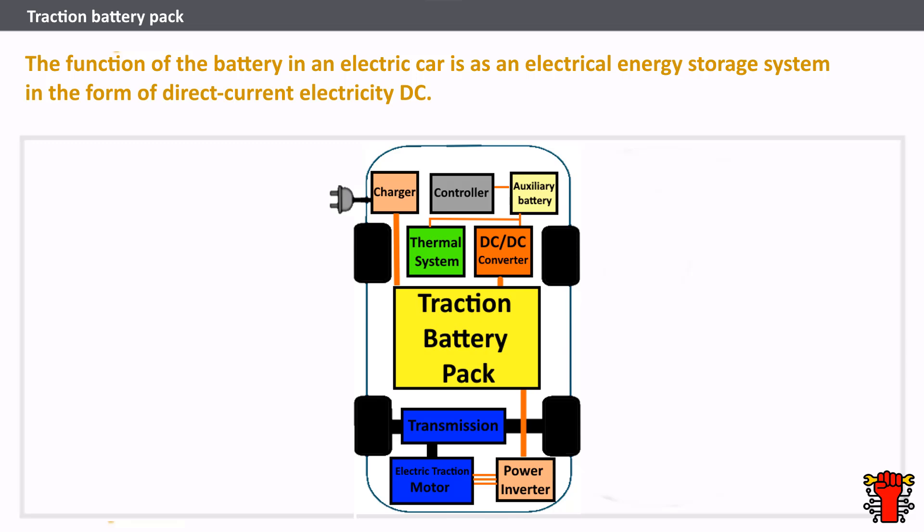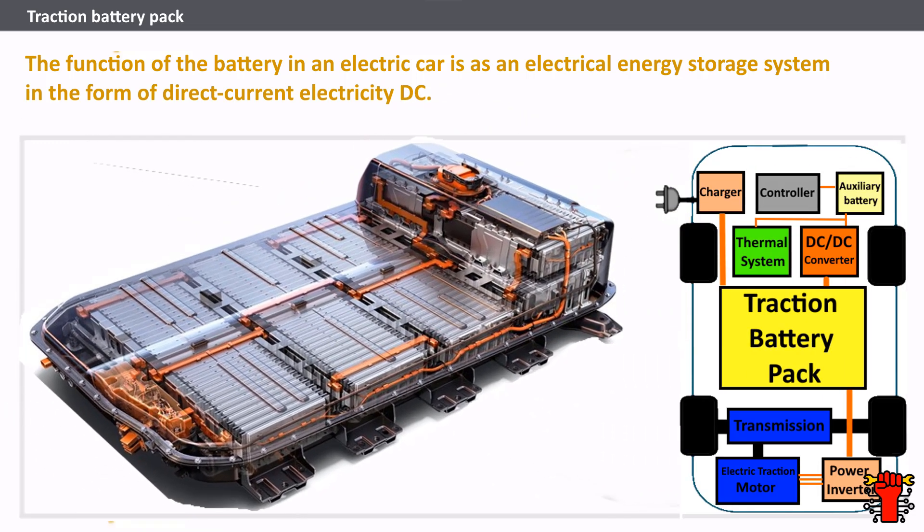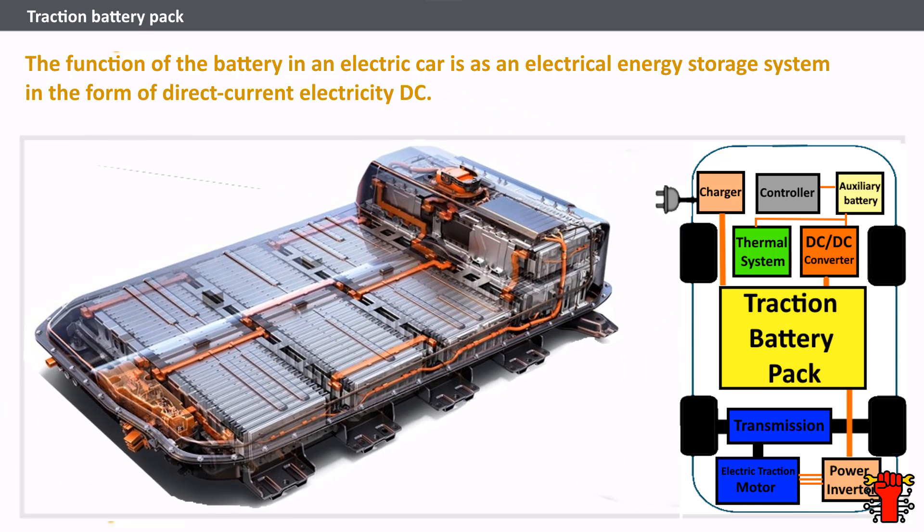The traction battery pack is installed in almost all types of electric cars. Its function is as an electrical energy storage system in the form of direct current (DC) electricity. When it receives a signal from the controller, the battery flows DC electrical energy to the inverter, which is then used to drive the motor.